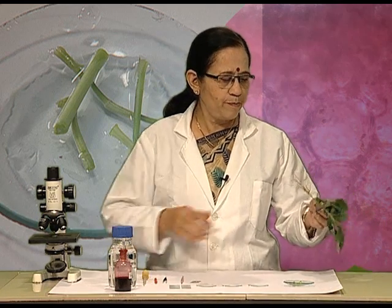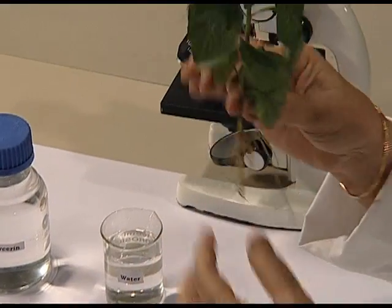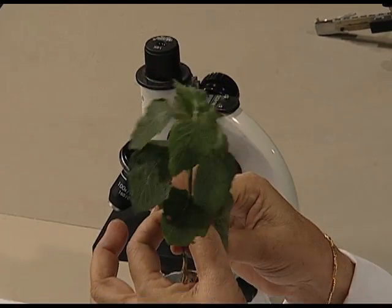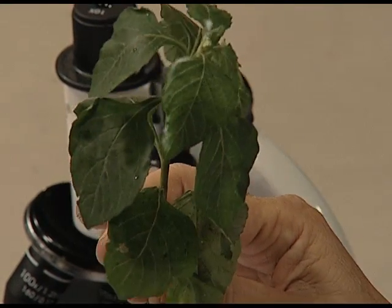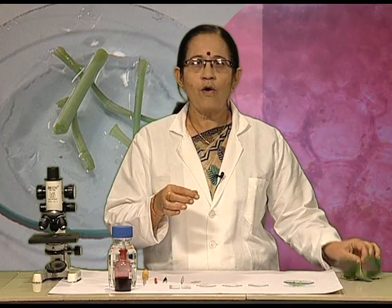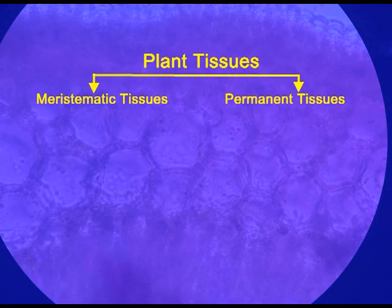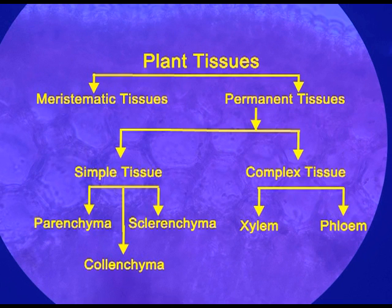Now, observe this plant. This plant is having roots, stem and leaves. Each of these organs of this plant is made up of tissues. Plant tissues are mainly of two types: meristematic tissues of dividing cells, and permanent tissues of non-dividing cells. Permanent tissues are further divided into simple and complex tissues. Simple tissues can be grouped into parenchyma, colenchyma and sclerenchyma, whereas xylem and phloem are the examples of complex tissues.